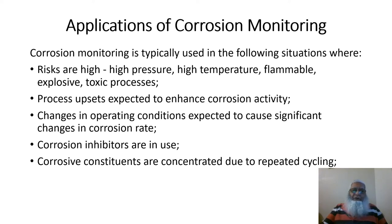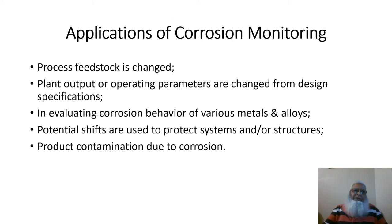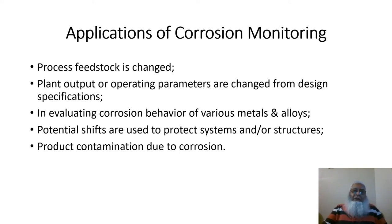Corrosion monitoring is applied where corrosive constituents are concentrated due to repeated cycling, where process feedstock is changed, where plant output or operating parameters are changed from design specifications, in evaluating corrosion behavior of various metals and alloys, where cathodic protection potentials are used to protect systems or structures, and where product contamination is likely to happen due to corrosion.